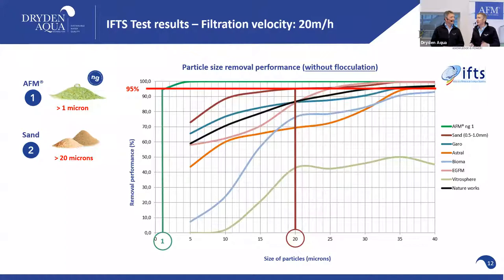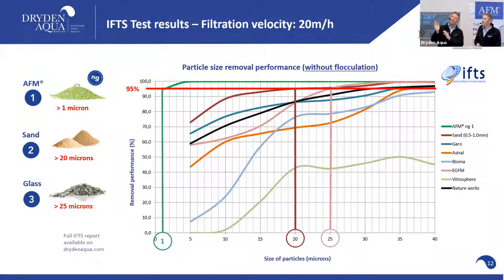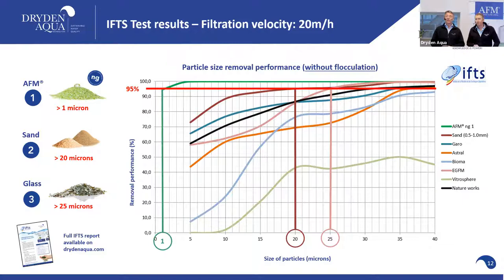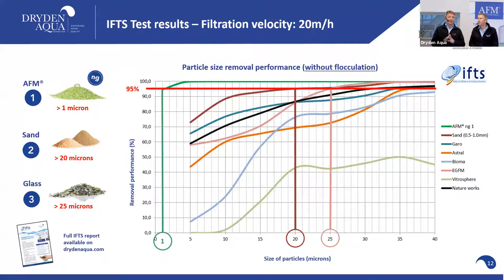Second best after AFM is sand. A good quality coarse sand (0.5–1.0 mm) provides 20-micron filtration. In Switzerland and Germany, 0.4–0.8 mm sand may get down to 15 microns. Then come the various glass media — none of which beat sand. Our DGS glass is around 10 microns. The takeaway: don't use poor glass media; if you want proper filtration go for AFM NG. The difference between 20 microns and 1 micron is enormous.